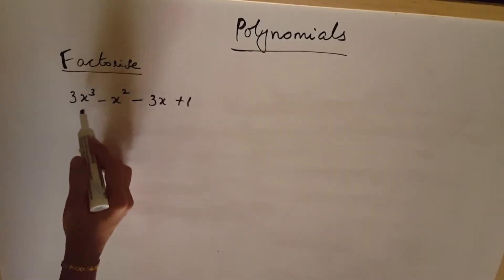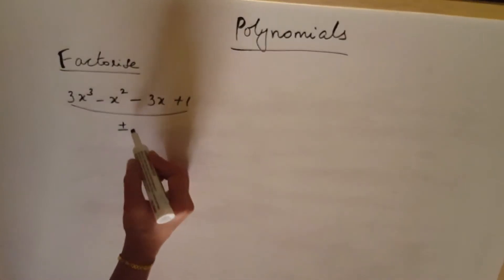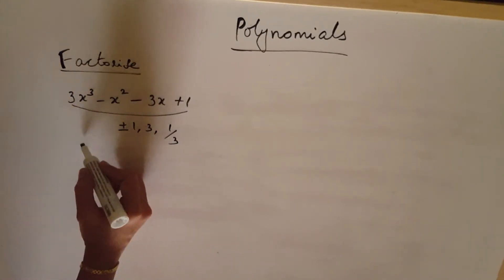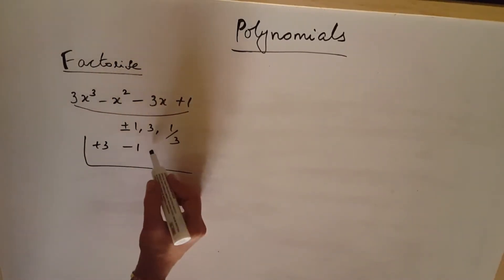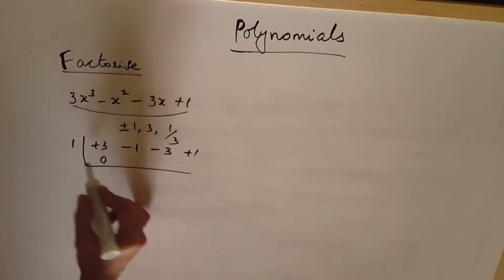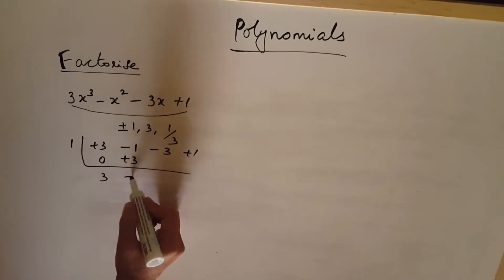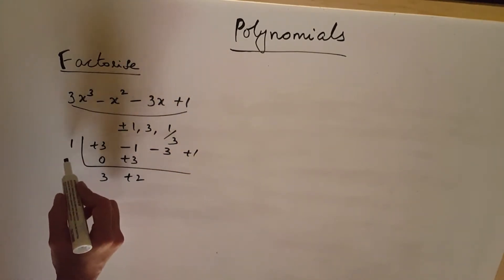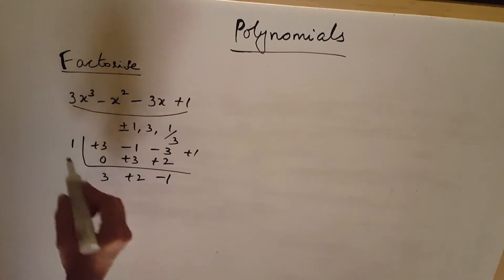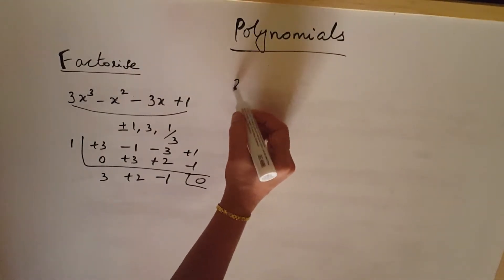In this question: 3x cubed minus x squared minus 3x plus 1. Factors to try are plus or minus 1, 3, and 1/3. Starting with coefficients 3, minus 1, minus 3, plus 1 and trying x equals 1: we get 3, plus 2, comes minus 1, into plus 1 gives minus 1, remainder is 0. So x minus 1 is a factor.